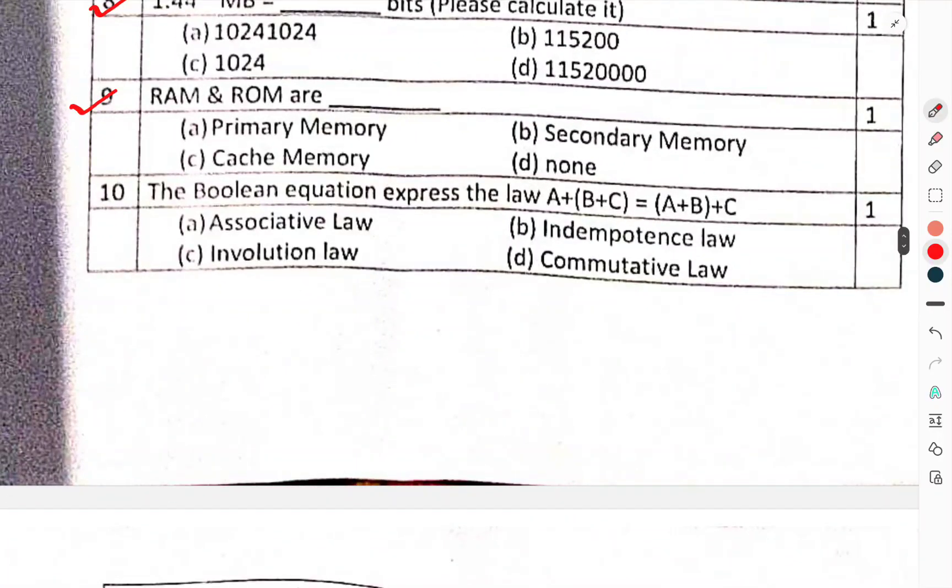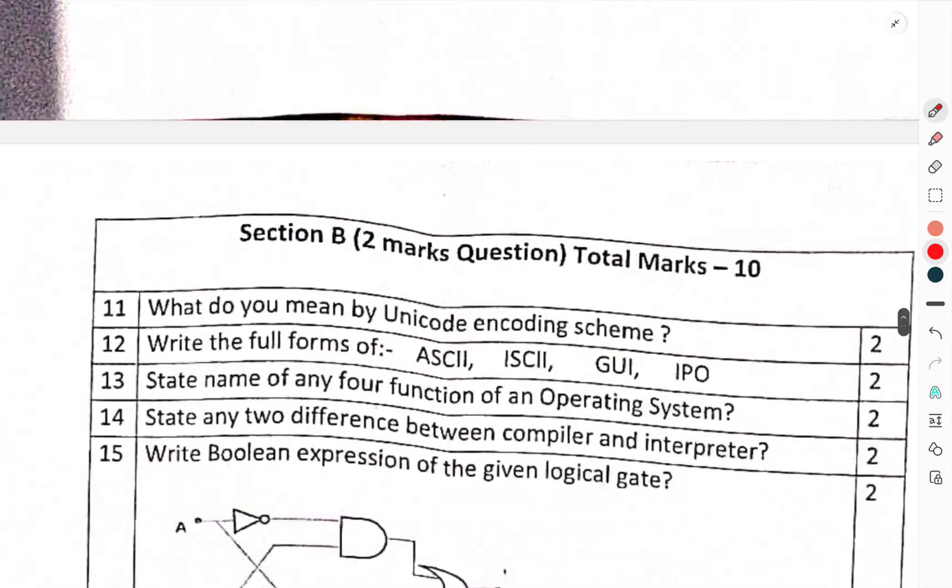Question number 9: RAM and ROM are... Question number 10: Boolean equation express the law A(B plus C) equals AB plus AC. Which law is it? You have to tell.